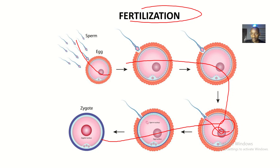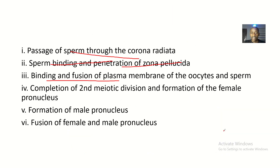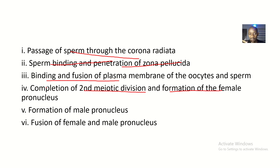Then there is completion of the second meiotic division and formation of the female pronucleus. This is basically how the oocyte responds when the sperm enters the ooplasm, because the oocyte is arrested at metaphase of the second meiotic division, waiting for a sperm to fertilize it. If no sperm fertilizes it, it dies after 24 hours and gets flushed out as menstrual flow.